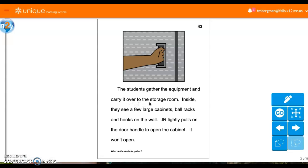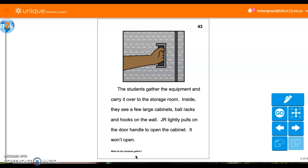The students gather the equipment and carry it over to the storage room. Inside, they see a few large cabinets, ball racks, and hooks on the wall. J.R. lightly pulls on the door handle to the cabinet. It won't open. What do the students gather? So gather means to take everything and kind of put it in one space. What do they gather up? Yeah, all the sports equipment.